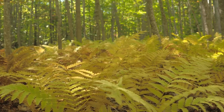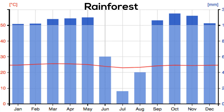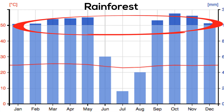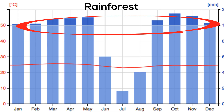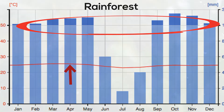As you can see from this climograph, rainfall is very high in a tropical rainforest and the temperature varies very little throughout the year. It rains often in the tropical rainforest.